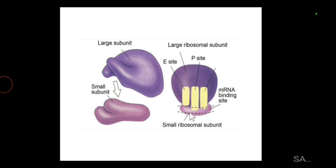On the small ribosomal subunit, an mRNA binding site is present. The mRNA is basically bringing the DNA template — whatever protein is required by the nucleus for the cell, its template is carried by the mRNA. So DNA's template is mRNA, and it brings that instruction to the ribosomes for the synthesis of proteins.